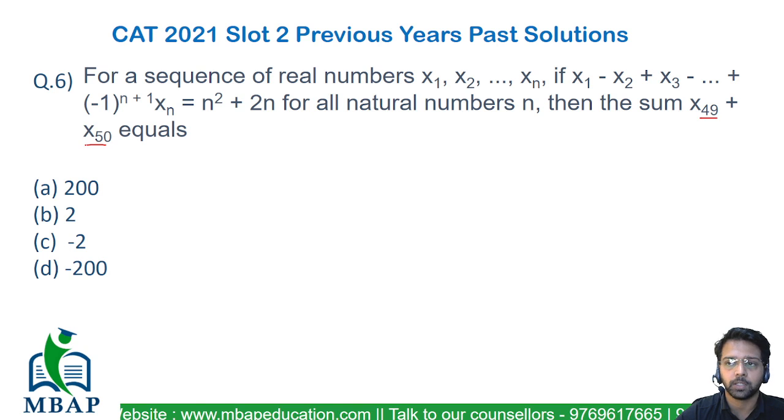I repeat, the question is find the value of x49 plus x50. The only pattern which you can see is negative plus positive, positive plus negative till the values which are ongoing.